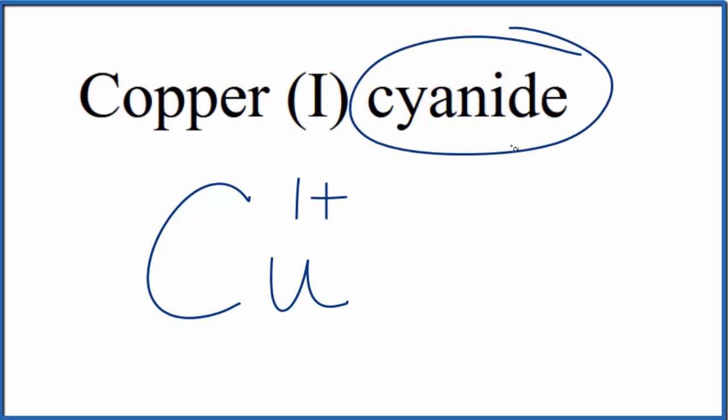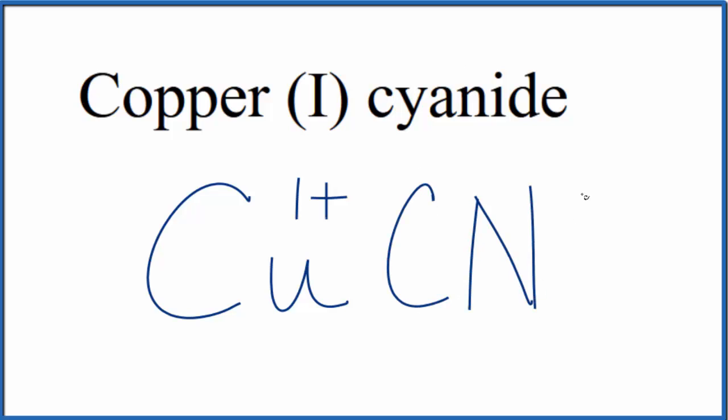For cyanide, you're not going to find that on the periodic table. You need to memorize that the cyanide ion is CN, and the whole thing has an ionic charge of one minus. Or, if you're allowed, you can look it up on a table of polyatomic ions.